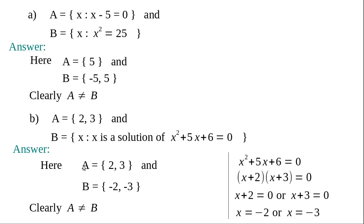But are A and B equivalent? Yes — both contain 2 elements, so n(A) = n(B) = 2. Note: all equal sets are equivalent, but all equivalent sets are not necessarily equal. Questions (c), (d), and (e) are assignment — do them at home after writing the content into your notebook.